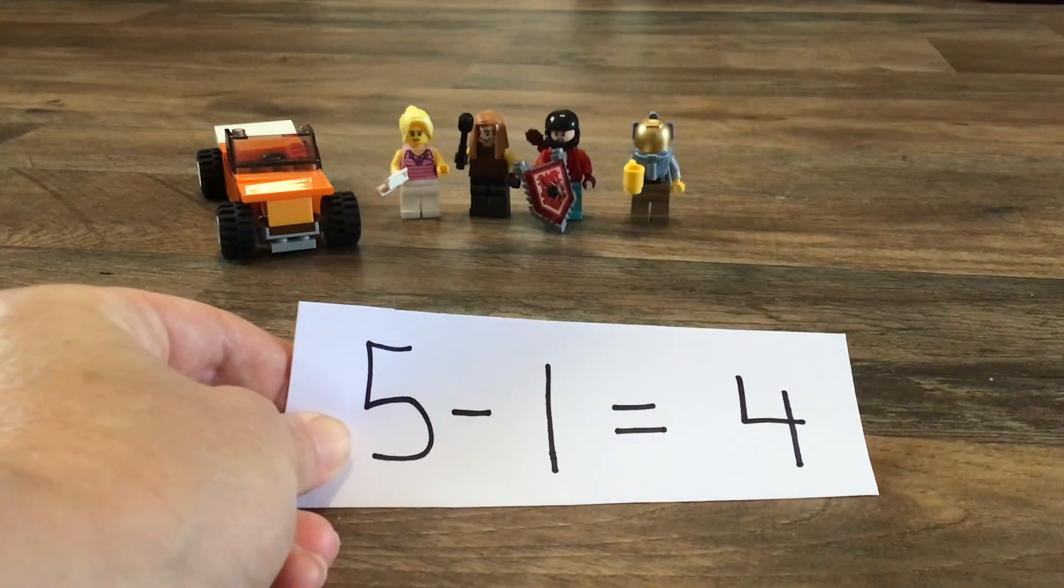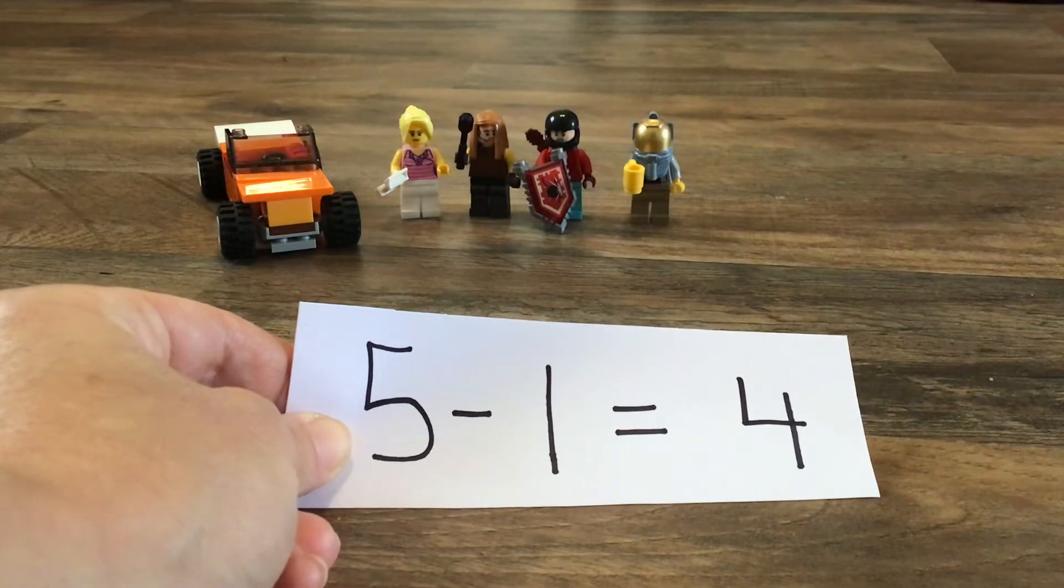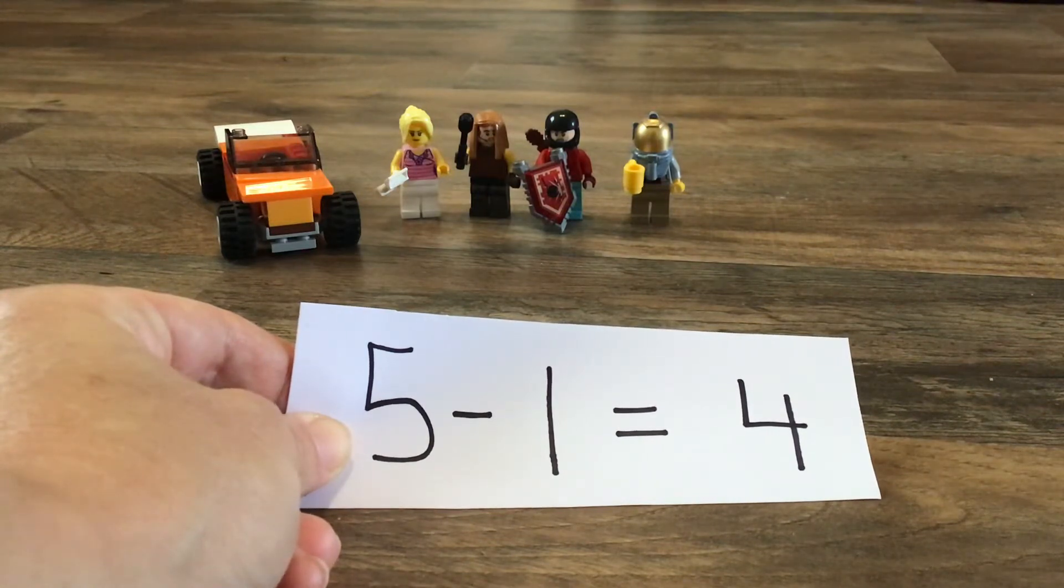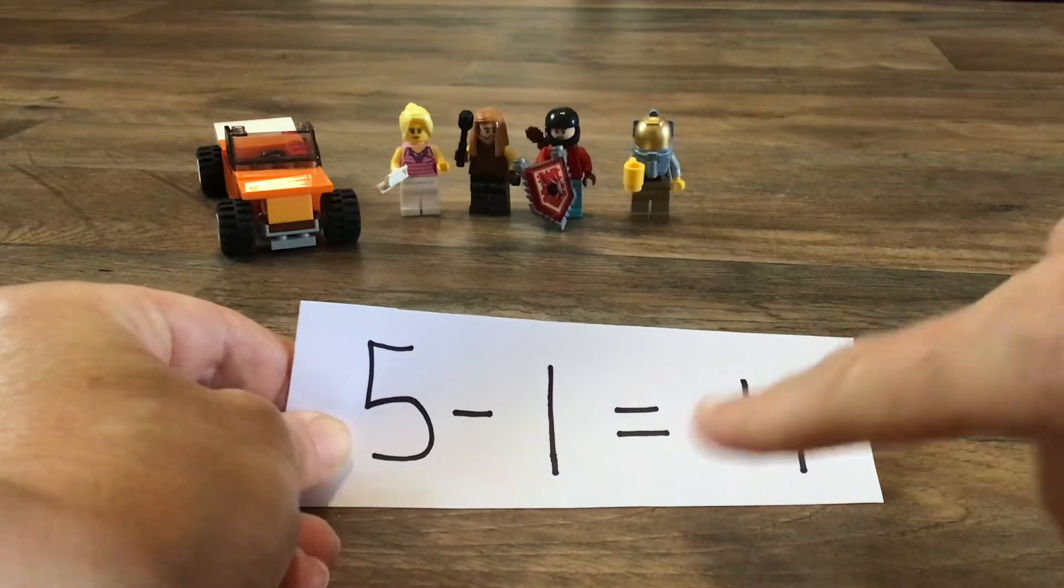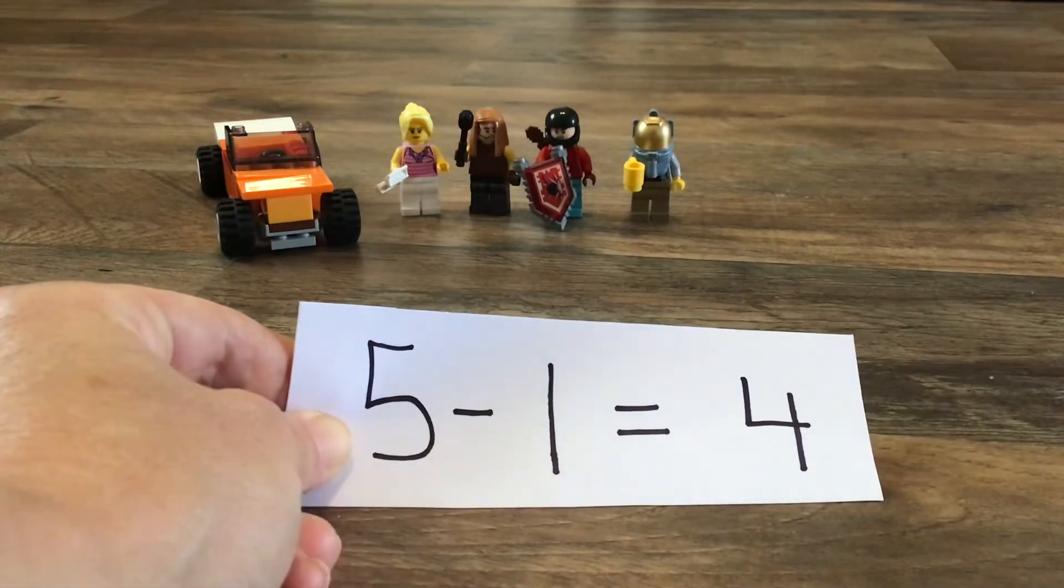he's called a minus sign. That means that we took something away. So we had five and then we took away one Lego Friend and this sign, remember equal, means all together. Now we have four all together.